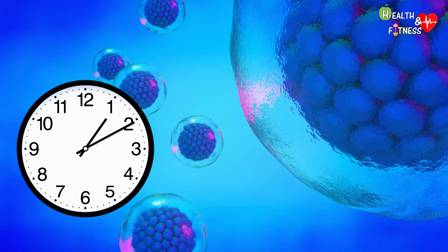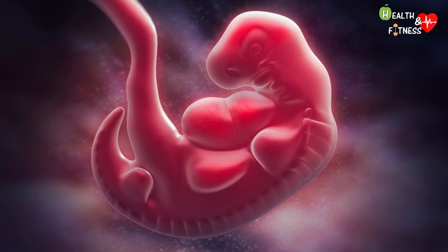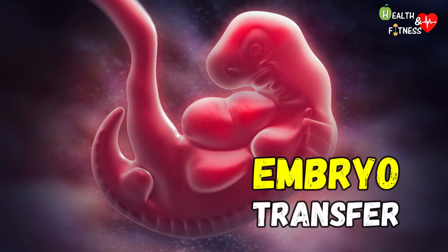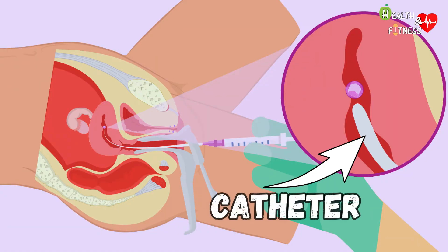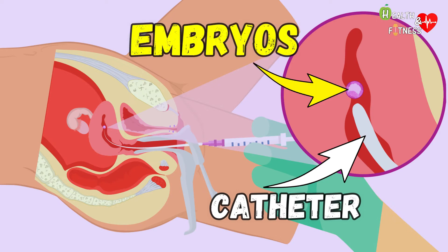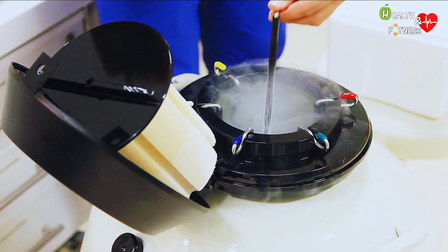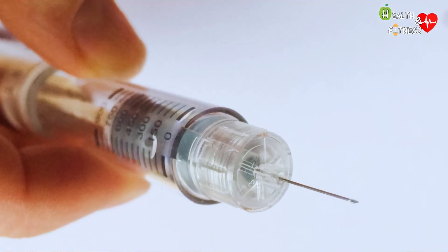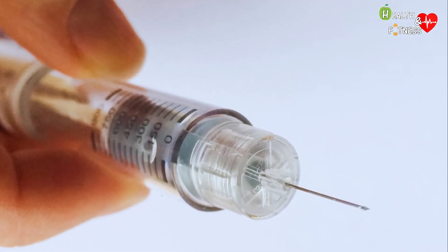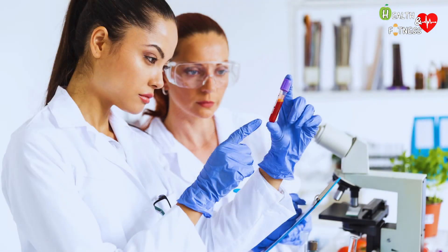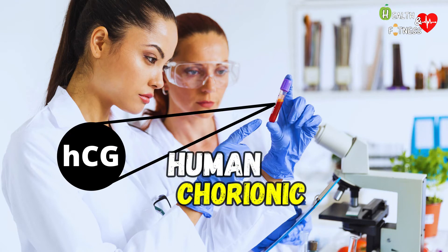Approximately 18 hours after insemination, it will be verified whether and how many oocytes have been fertilized. In the following days, we will check how many embryos have formed. At this point, we will proceed with the embryo transfer. Through a thin catheter and under ultrasound control, the uterine cavity is reached where the embryos are released. Untransferred embryos are frozen so they can be reused if pregnancy is not achieved on the first attempt. The subsequent transfers will not require further ovarian stimulation or the removal of the eggs. After about two weeks, a pregnancy test is done by taking blood, looking for the pregnancy hormone HCG, human chorionic gonadotropin.